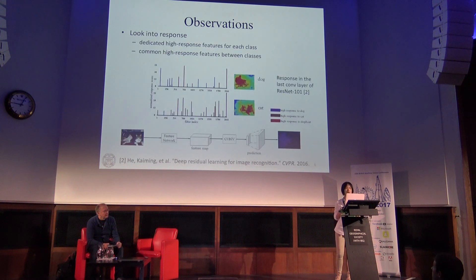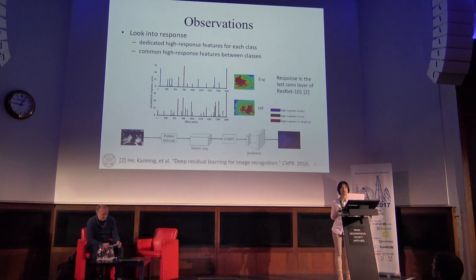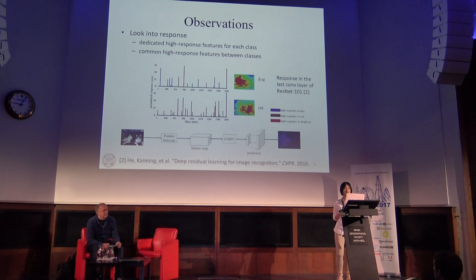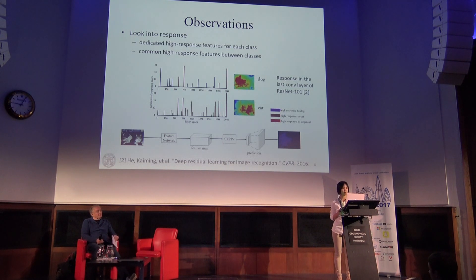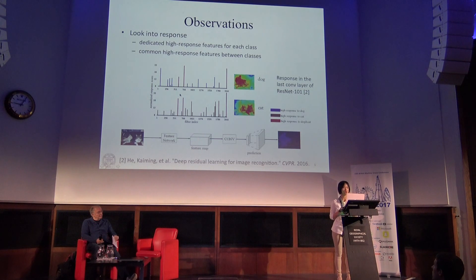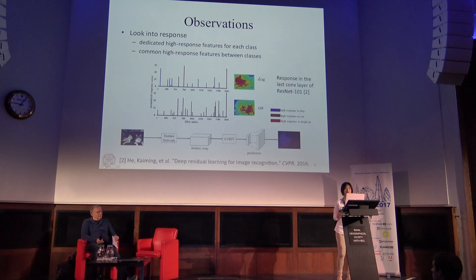We further dug into the response of the segmentation network. We looked at the second-to-last layer of the network, using ResNet-101 as our base architecture, which has 2048 channels in total. If we look at the channel response at every region — at the ground truth dog region and cat region — we find that some channels have very high response for the dog, others for the cat, but some channels have high response for both dog and cat. That's probably why at the final layer output we have a region with high response for both, which is our observed problem.